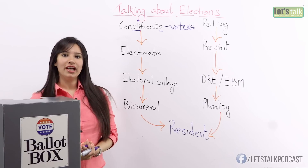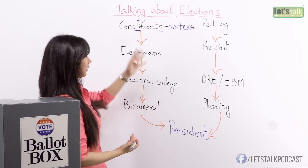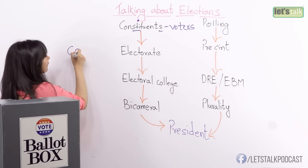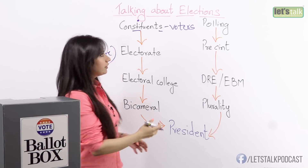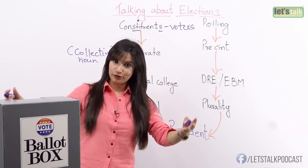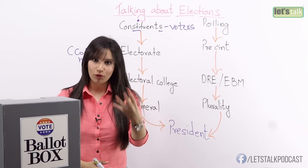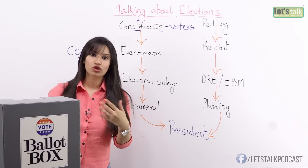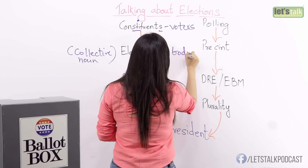Let's look at the next word: electorate. Who is the electorate? Do you think this is a countable noun like constituents? No, it's not. It's an uncountable noun because it's a collective noun. Electorate refers to the body of constituents — when all the constituents, meaning all the voters, come together, they form the electorate or the electoral body which votes. The word electorate comes from a Latin word called elector, which means chooser or voter.